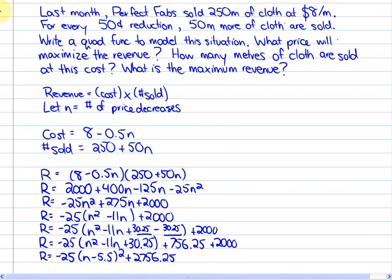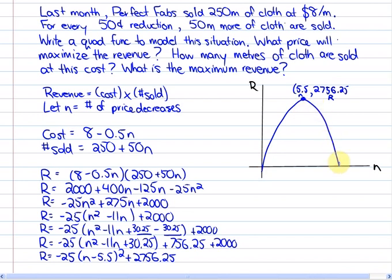So, in answer to all of our questions, we know where the vertex is, and we can then substitute points of the vertex into our expressions for cost and numbers sold to finally solve. So, we have revenue and n. In this particular case, our value for n is 5.5. And our value for revenue is 2,756.25. And it opens once again down. So, in this particular case, what price will maximize the revenue?